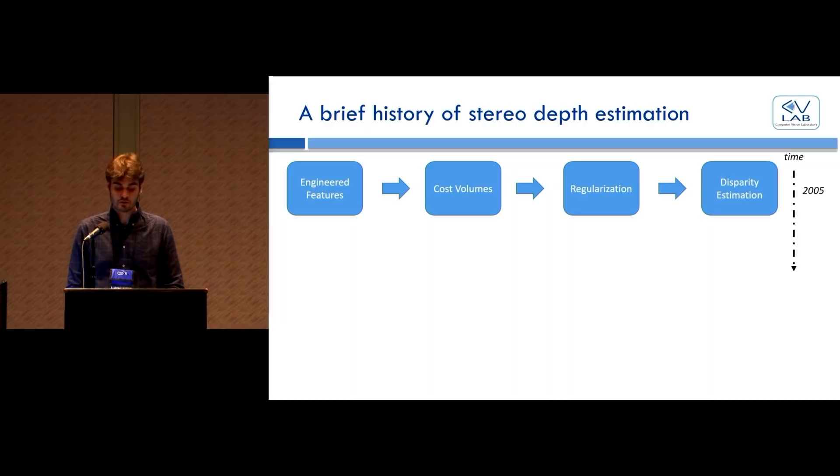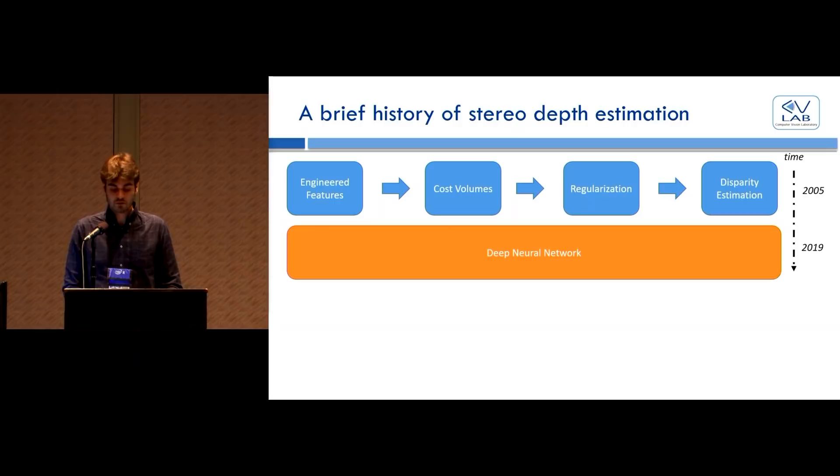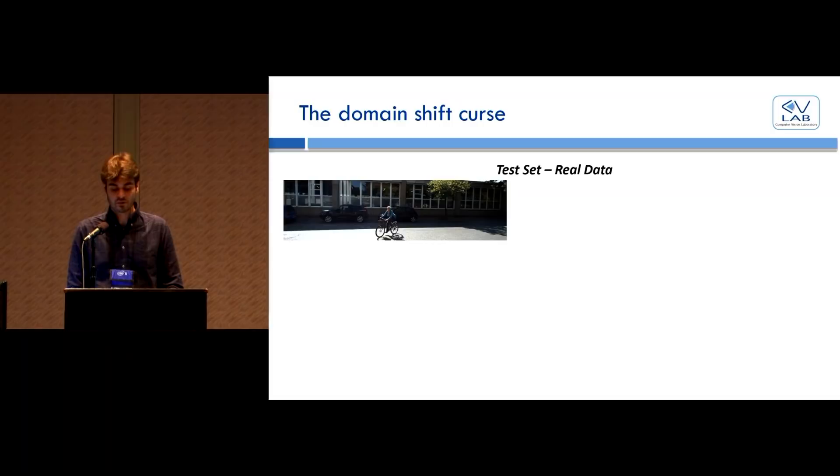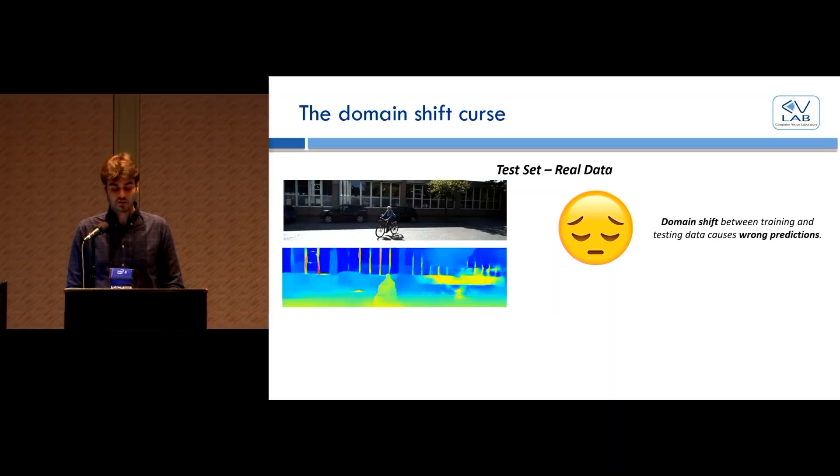Nowadays, instead, the state-of-the-art approach is to collapse the four steps into a single deep neural network that takes RGB images as input and directly regresses dense disparity values as output. These models are typically trained end-to-end by supervised learning, and given the high number of parameters require many annotated samples. However, producing pixel-wise depth annotation is cumbersome and costly as it requires specific sensor setup as well as a lot of human effort. Thus, the common practice in the field is to perform most of the training on synthetic data where the annotation can be obtained for free during the rendering process.